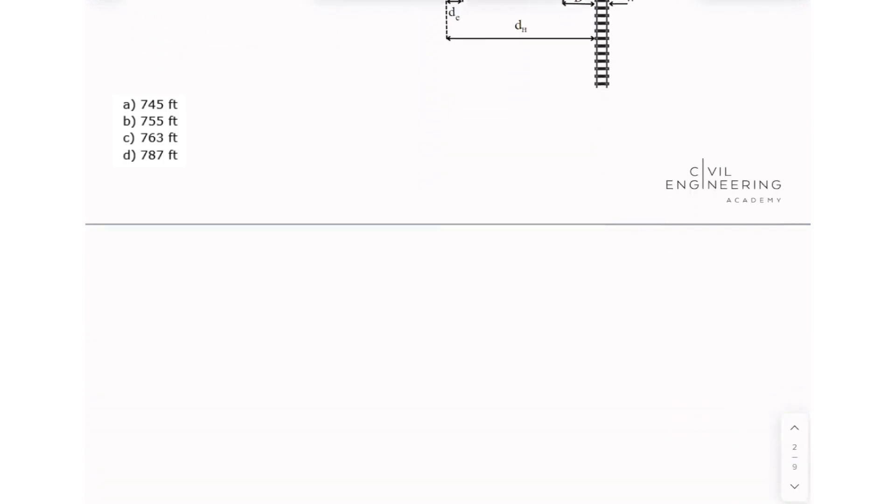For that we're going to be looking in our AASHTO green book on page 9-163. It's very important that you open the AASHTO green book to look at the equation with me because this equation has a lot of variables. Please open your AASHTO green book on page 9-163.